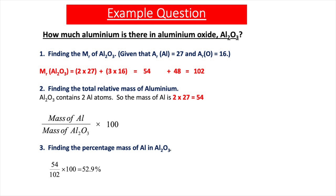Here's an example: we're asked to find how much aluminium there is in aluminium oxide. Aluminium oxide has the formula Al₂O₃. The first step is to find the MR of Al₂O₃. The AR value of aluminium is 27 and the AR value of oxygen is 16, so the MR of Al₂O₃ is two lots of 27 added to three lots of 16, giving an MR of 102. Step two: aluminium oxide contains two aluminium atoms, so the mass of aluminium is 54. The percentage mass of aluminium is 54 divided by 102, times 100, giving a percentage mass of 52.9%.